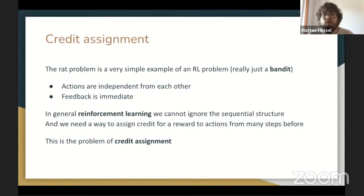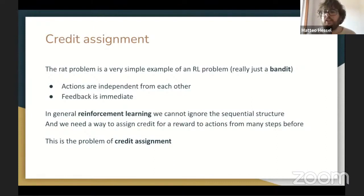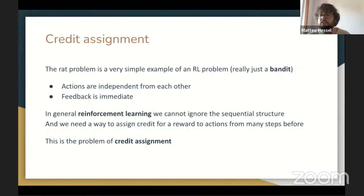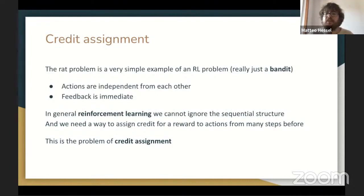Credit assignment comes along when we actually try to deal with the sequential nature of most decision making. In the rat example, each decision was basically independent of the previous one, but that's not the case in most settings. Typically, actions chosen early on may constrain the observations you see and the options available later. And because rewards could be very delayed, we need mechanisms to assign credit for a reward to actions that might have been selected many steps before. Dealing with the sequential structure of decision making is the fundamental topic of credit assignment in RL.